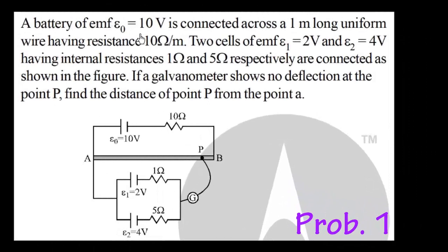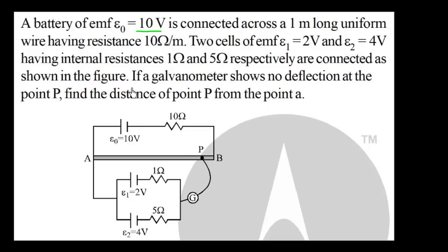A battery of EMF 10V is connected across a 1 meter long uniform wire having resistance 10 ohm per meter. Two cells of EMF 2V and 4V, having internal resistance 1 ohm and 5 ohm respectively, are connected as shown in the figure. There is a null deflection and we are asked what is the length X. At null deflection we have to find the value of X.